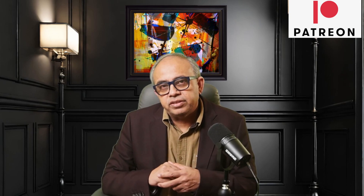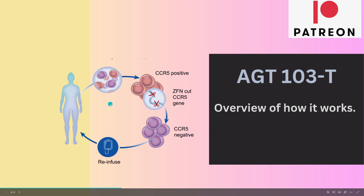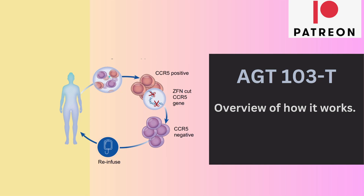Now I want to show you a few slides to illustrate some of the points. This is how AGT-103-T works: you take blood from the patient and isolate the CD4 T cells, delete the CCR5 gene so that the CD4 T cell cannot express CCR5, confirm those cells are CCR5-negative, multiply them, and re-infuse them into the body of the patient so that these cells will not be attacked by HIV — HIV can't get into them. These CD4 T cells will then command the CD8-positive T cells and other immune cells to attack and kill HIV.